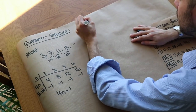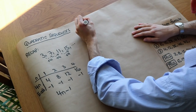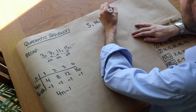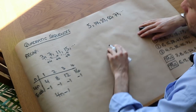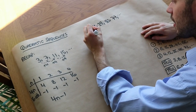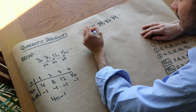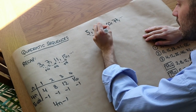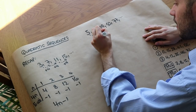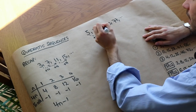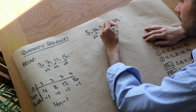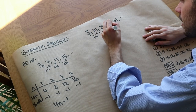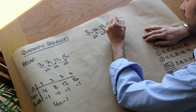We can use exactly the same principle for quadratic sequences. Say we had the terms 5, 14, 29, 50, and 77. We'd find the first difference: adding 9, then adding 15, then adding 21, then adding 27.